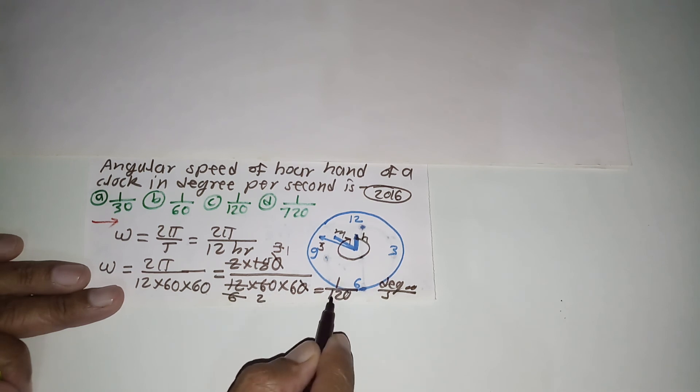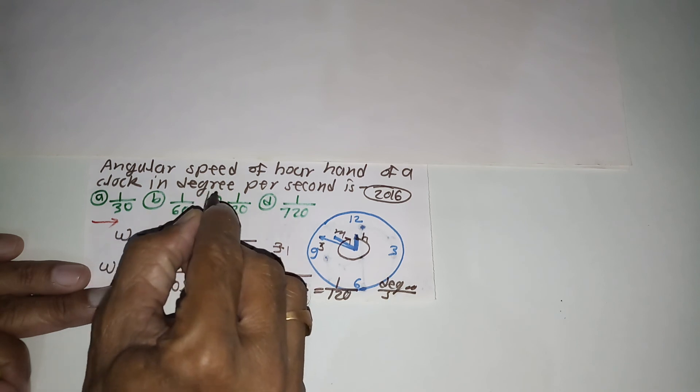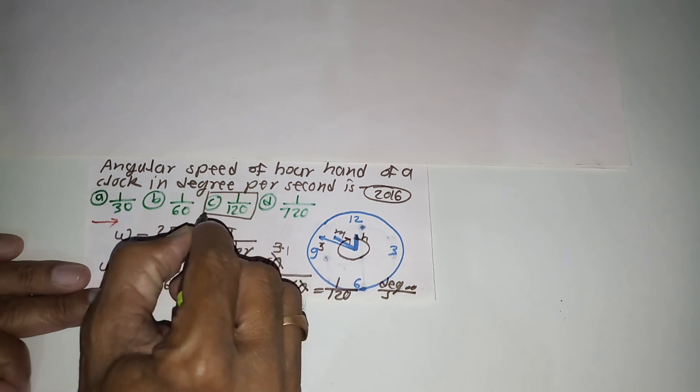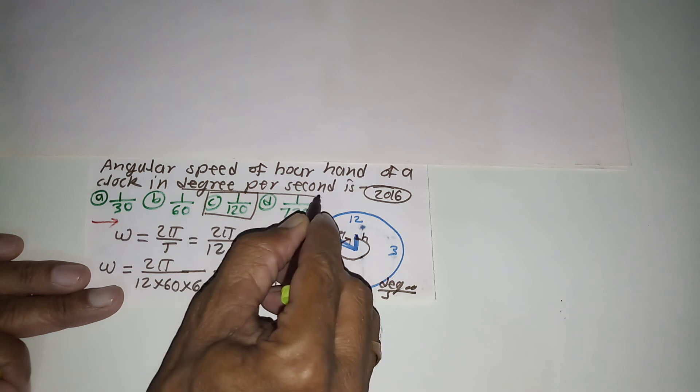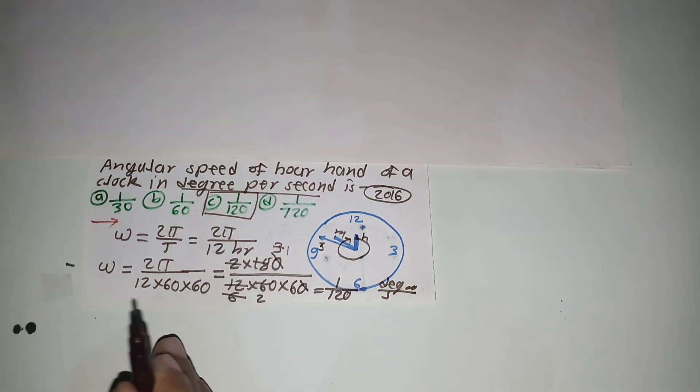1 upon 120 degree per second is the right answer for the angular speed of the hour hand in degree per second. I hope you understood, thank you very much.